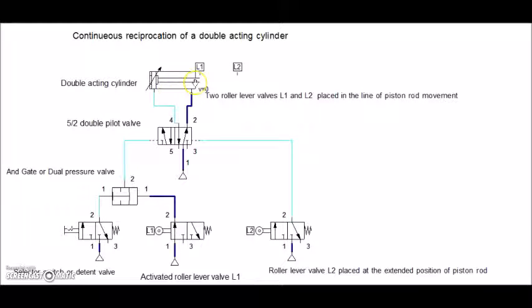Though it is at home position, the piston rod is activating L1. L2 is kept at the extended position of the piston rod and it is not yet activated.